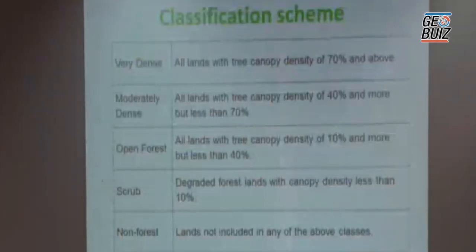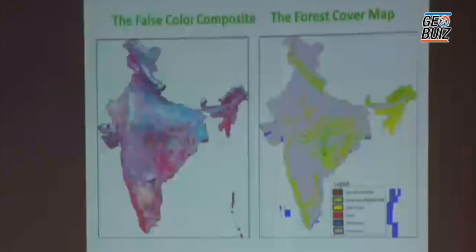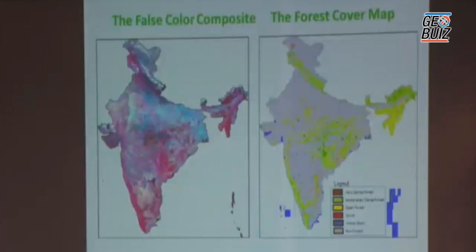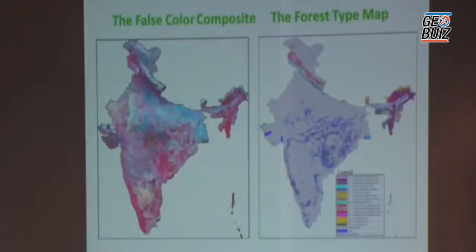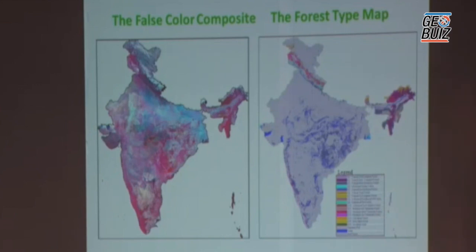These are the density classes we have identified, and based on that we are classifying the satellite data into different density classes. This gives us a picture of the different forest cover classes. On the left we have the data based on different classification methods, classifying the entire country into different forest density classes — this will be used as a major input for forest fire burnt area assessment. Using other data we have also identified different forest types at national level, showing how satellite data is used for forest cover and forest type identification.